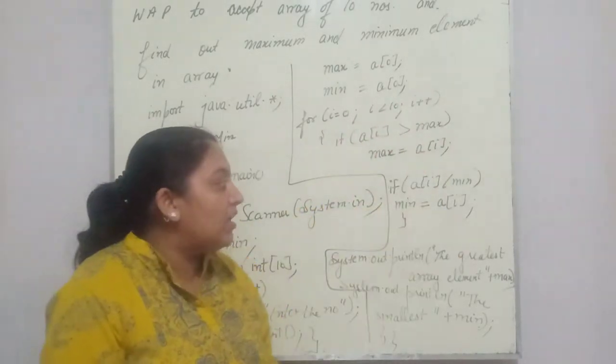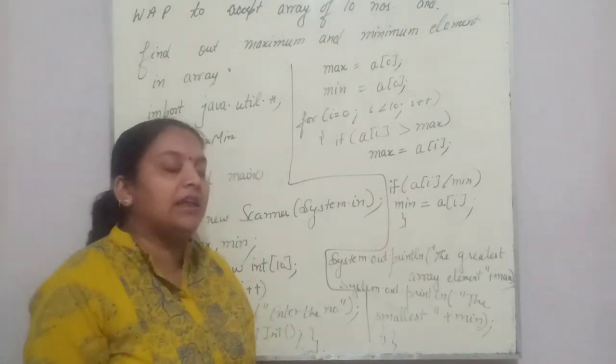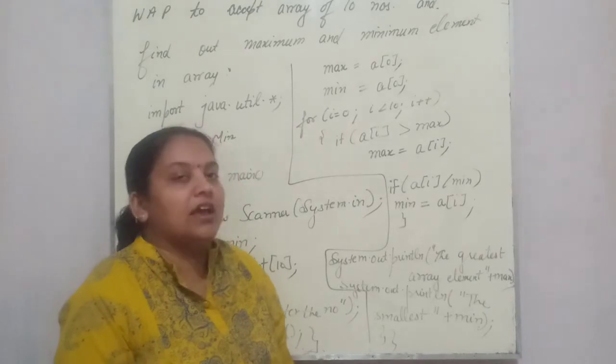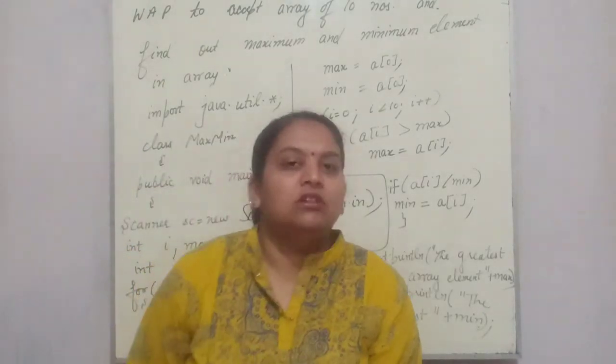then maximum will be a[i]. Otherwise, if a[i] is less than min, then my minimum will be a[i]. Then I will print maximum and minimum element. So that was your code.